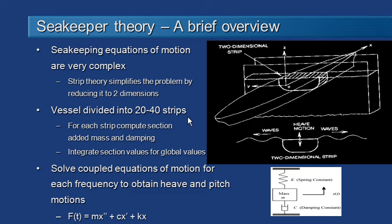Typically, to get a good result, we need somewhere between 20 to 40 strips along the vessel. We compute the mass and damping effects on each strip and then integrate all of those different sectional values together to get our overall global values.